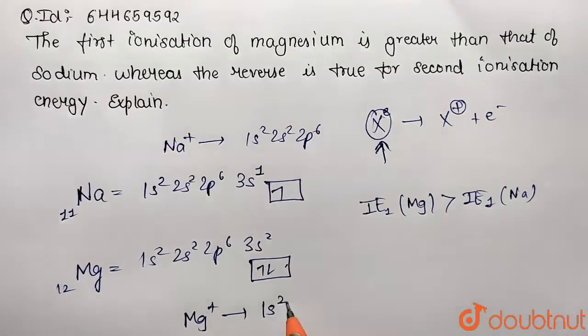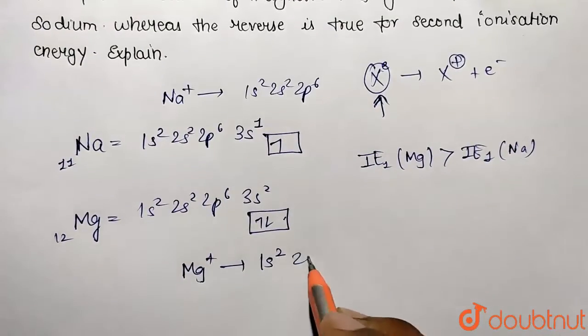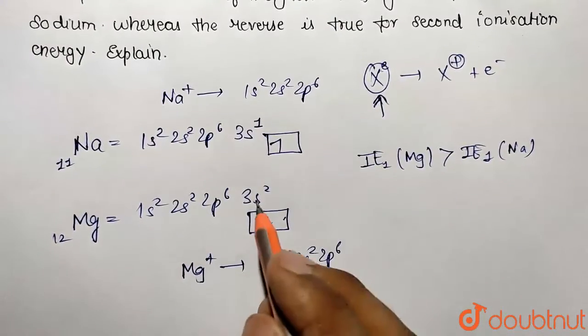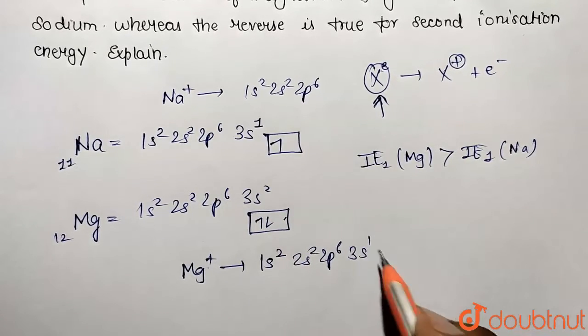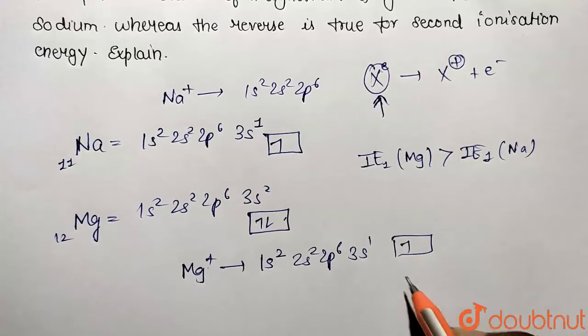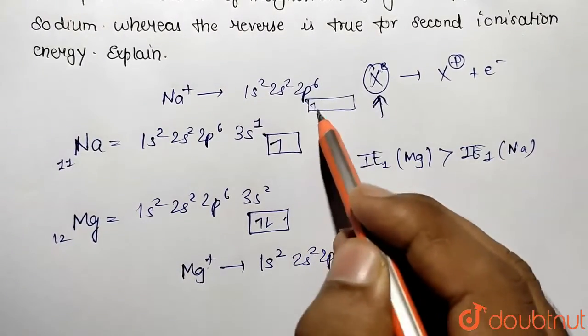And here if we remove this one electron, so magnesium after first ionization is going to have electronic configuration of 1s² 2s² 2p⁶ and 1 will be ionized. Because we have written the ionized form, so this is going to be 3s¹.